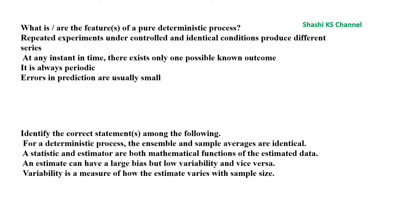Question 9: Identify the correct statement among the following. Options: for a deterministic process the n-sample and sample averages are identical; a statistic and estimator are both mathematical functions of the estimated data; an estimate can have a large bias but low variability and vice versa; or variability is a measure of how the estimate varies with sample size. The correct answer is: an estimate can have a large bias but low variability and vice versa. Note: the second option is incorrect because a statistic and estimator are mathematical functions of the observed data, not estimated data.